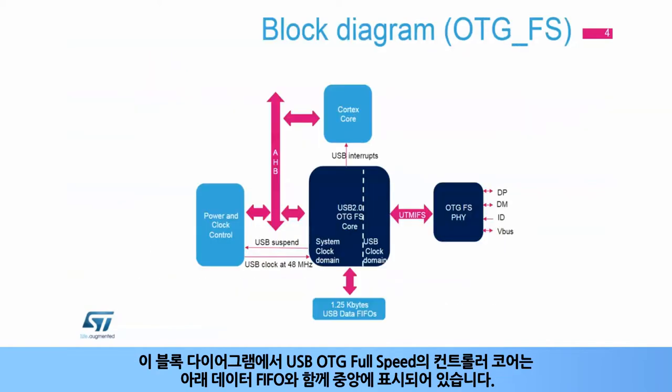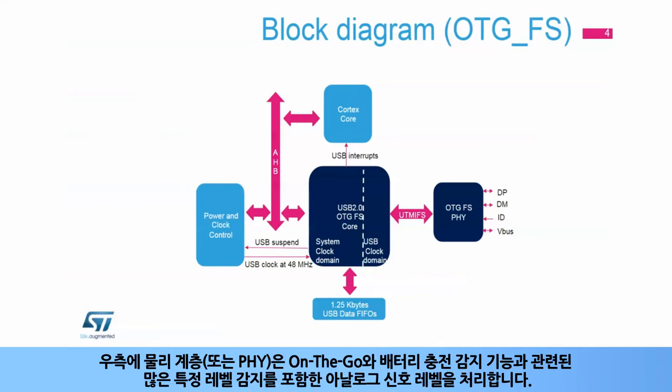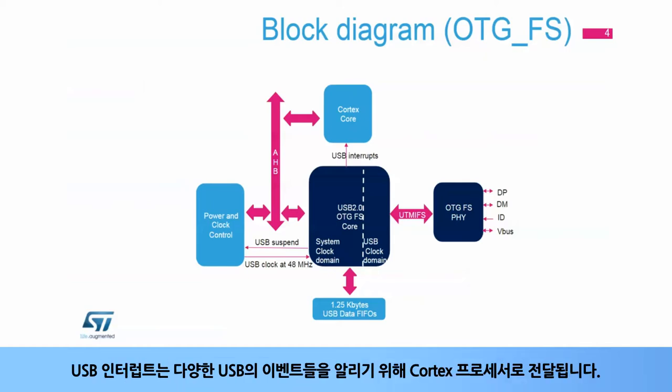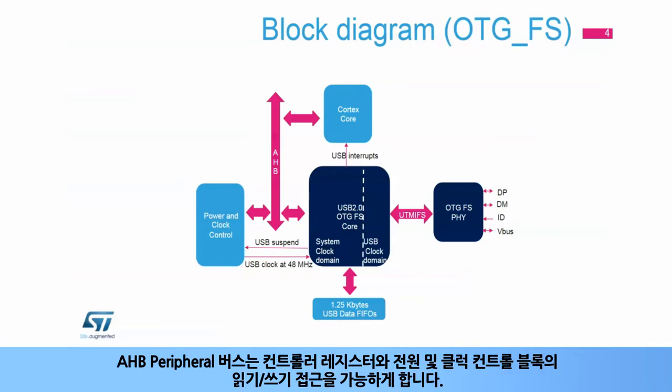In this block diagram, the USB OTG full-speed controller core is shown in the center with its data FIFOs below. The physical layer, or PHY, on its right side handles the analog signal levels, including many specific level detections relating to on-the-go and battery charger detection functions. The USB interrupt goes to the Cortex processor to signal various USB events.